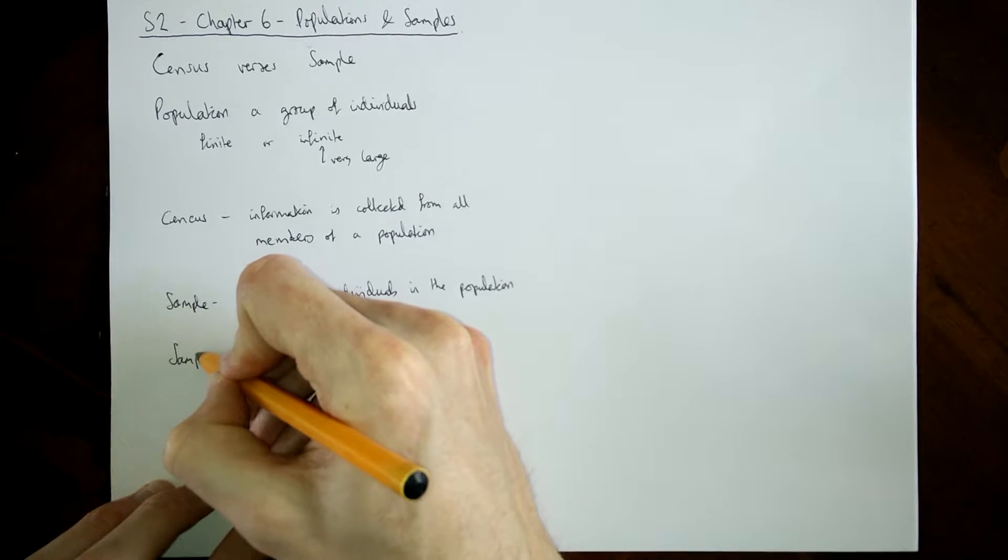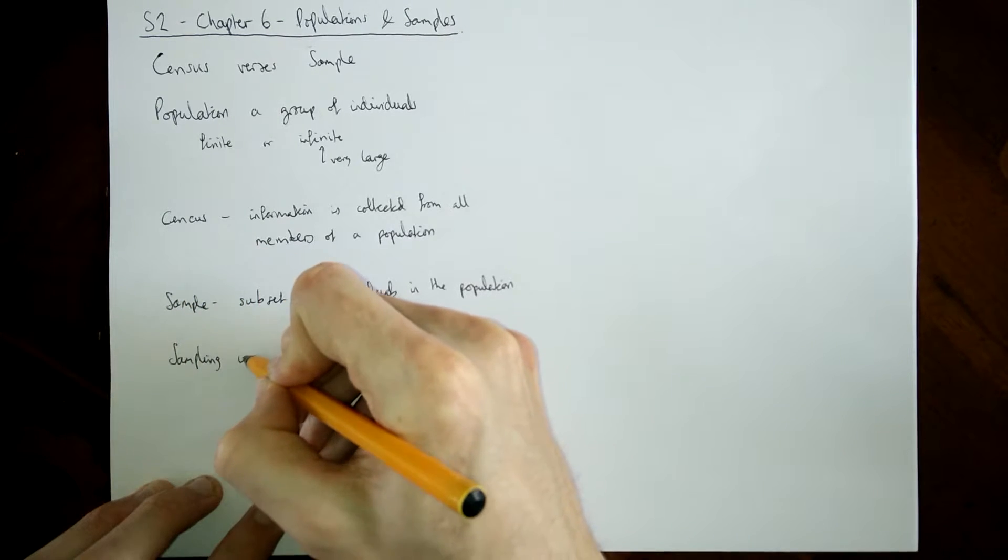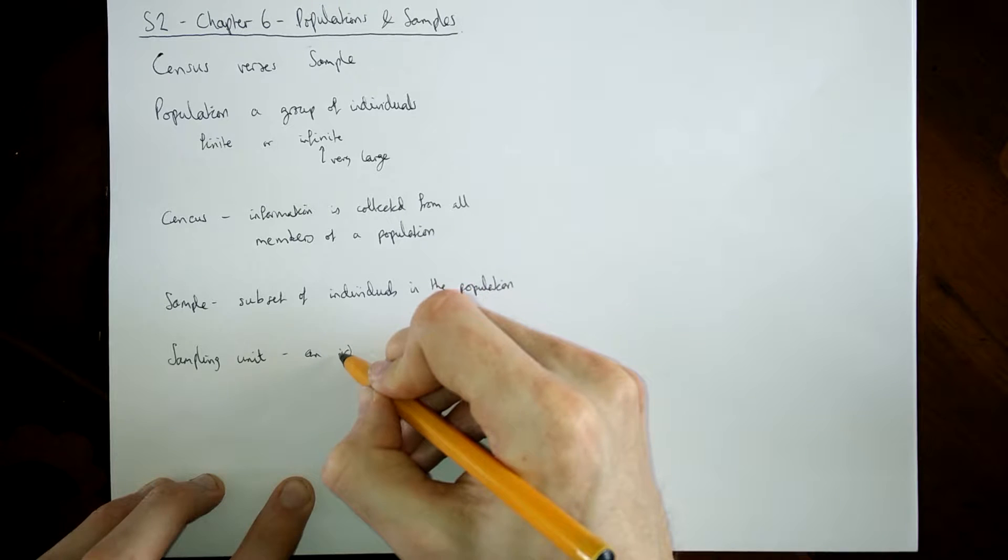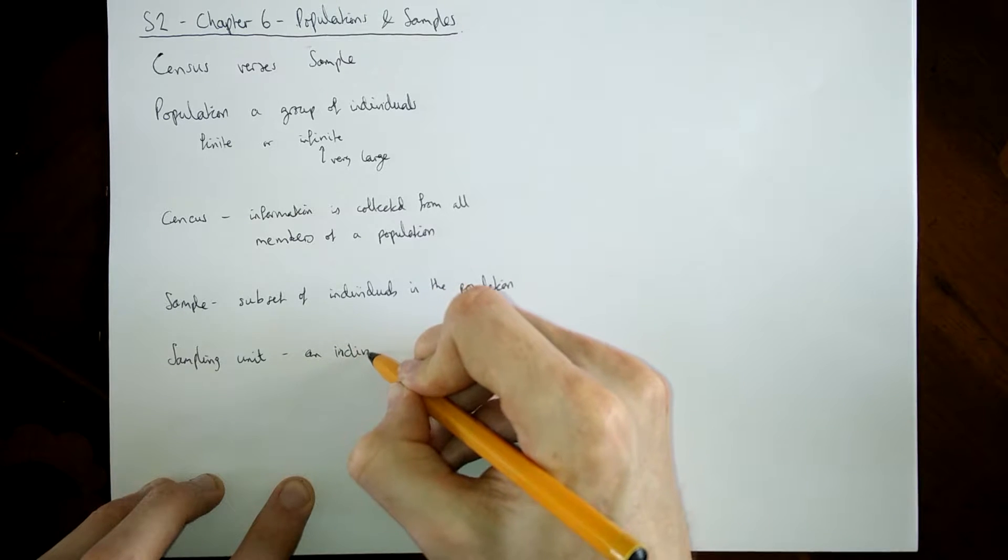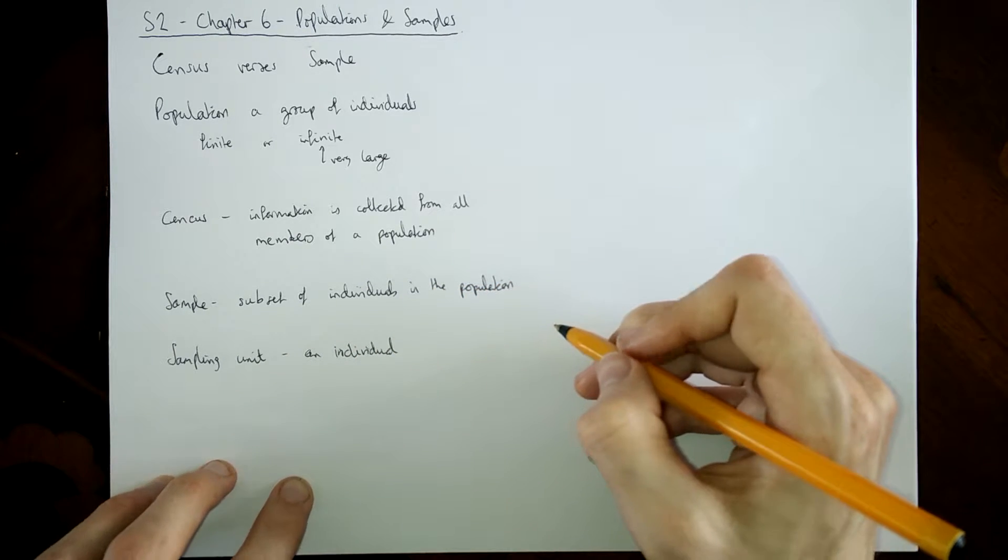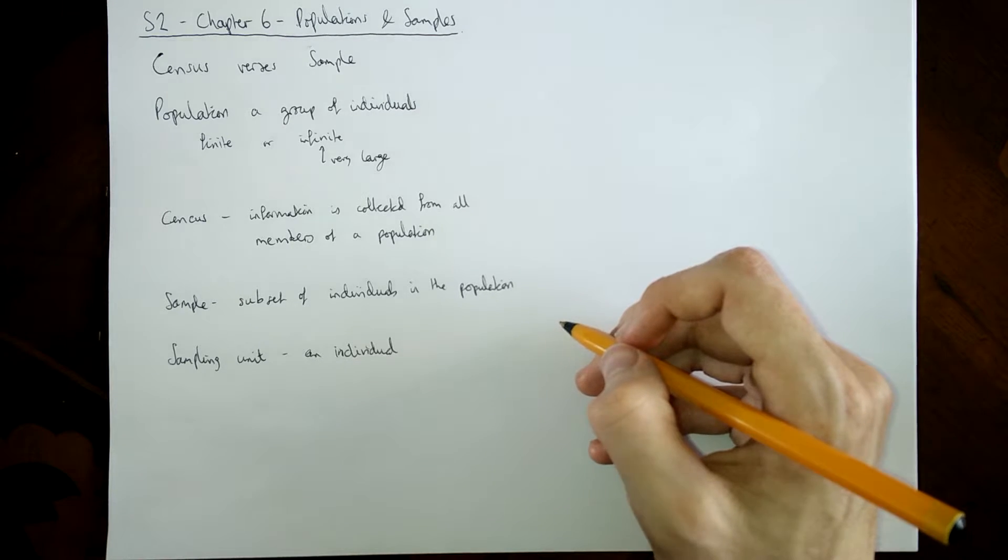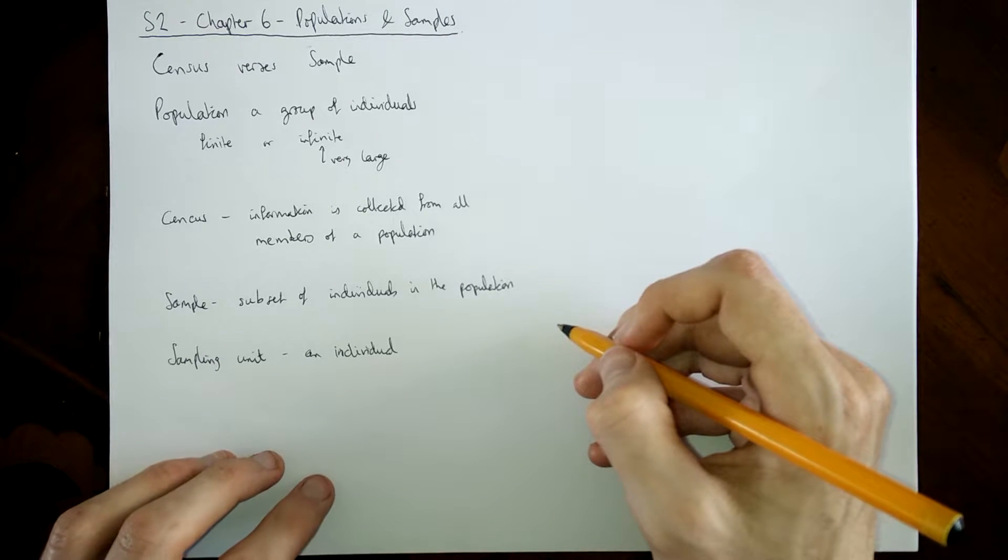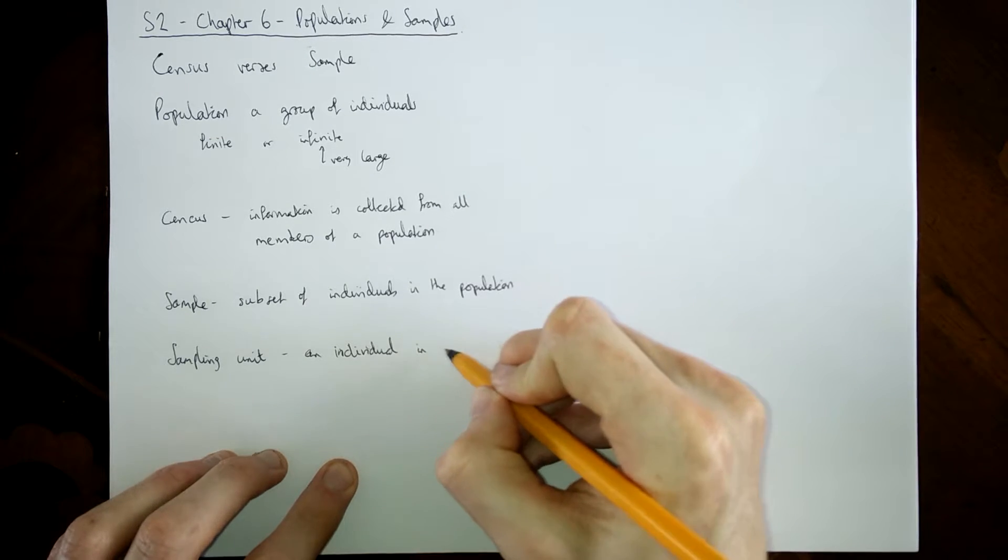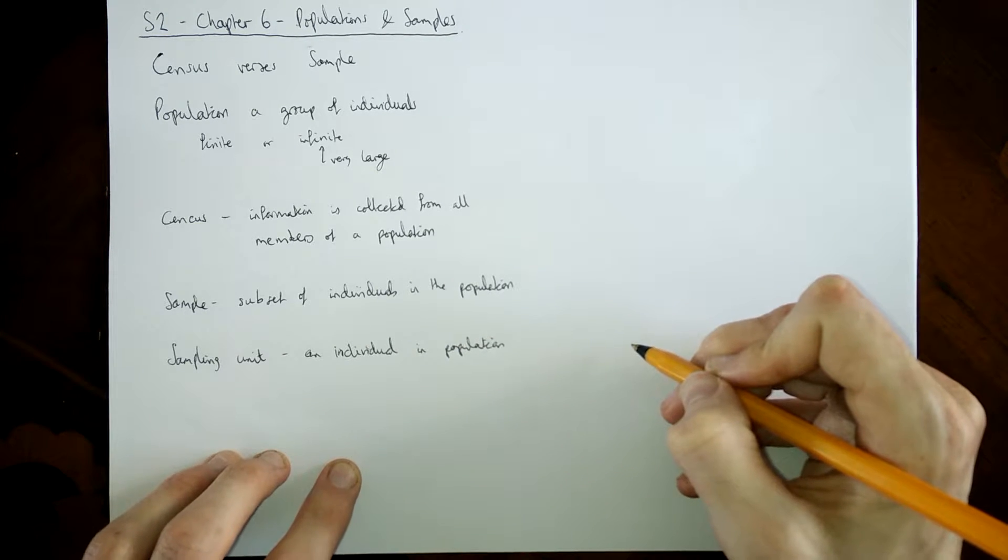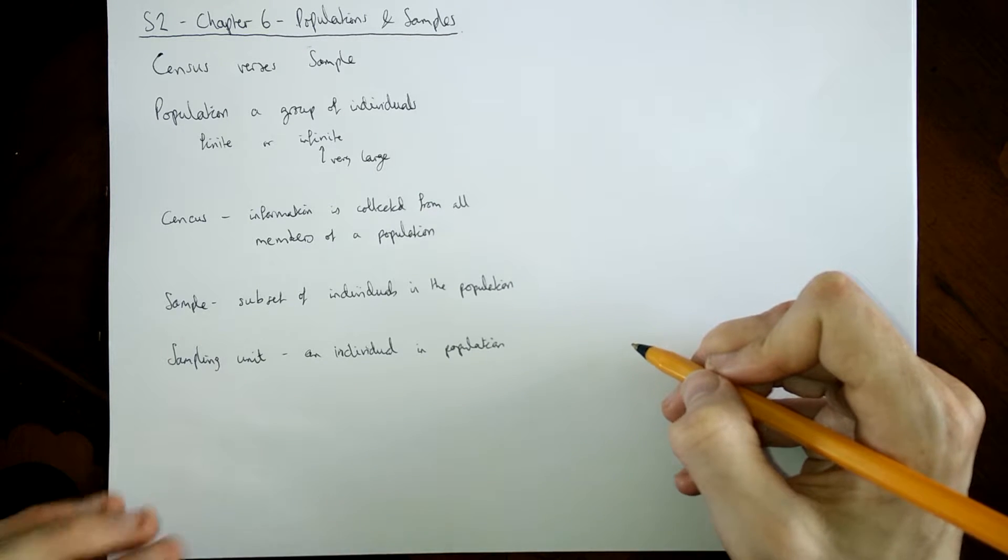Here's some other important words: sampling units. A sampling unit is just an individual. So literally it could be any individual in that population. It could be any one of those elephants or any one of those TVs we're talking about or any of the people in your workplace. It doesn't matter if they're picked for the sample or not. They're just something that could possibly be chosen to be part of the sample.